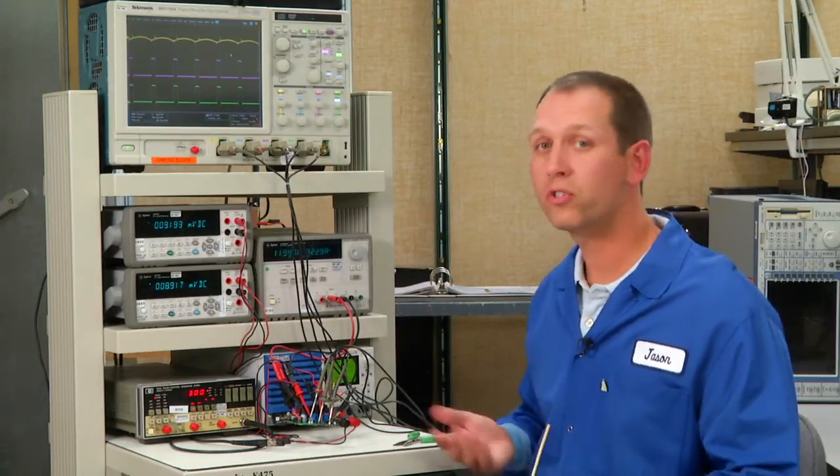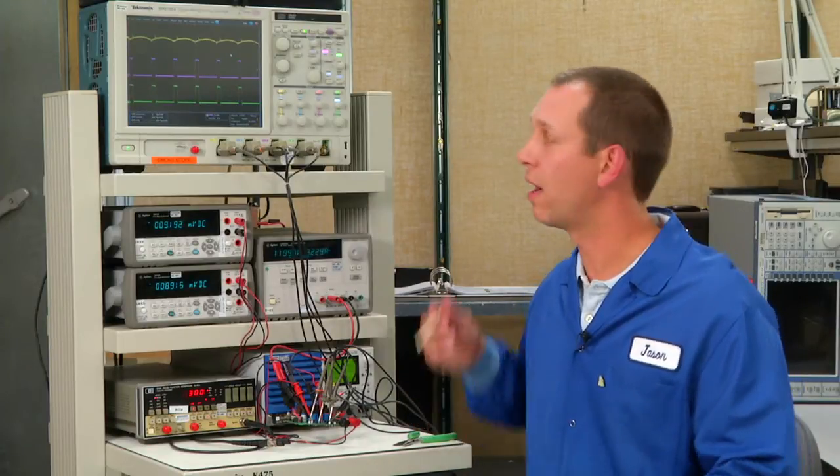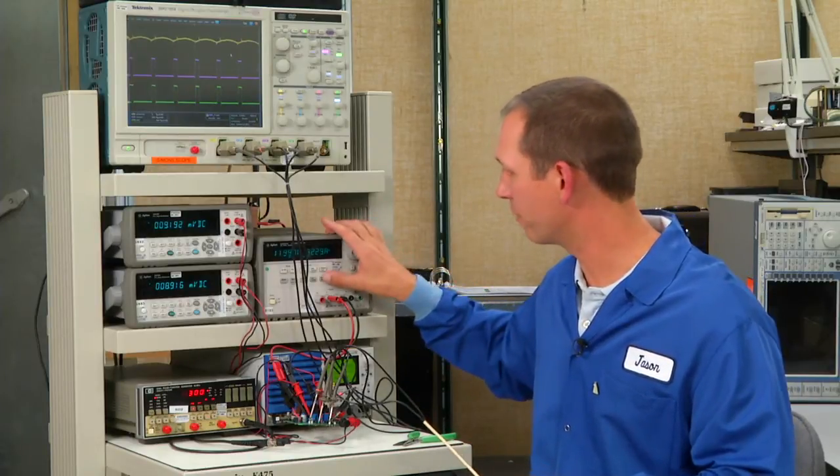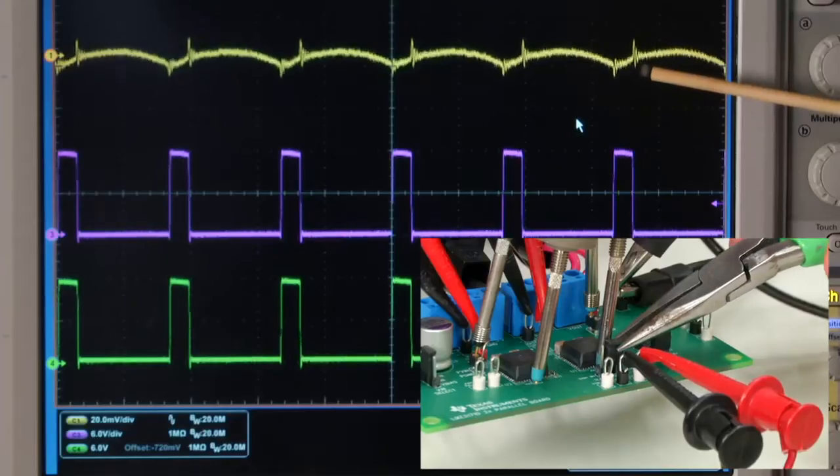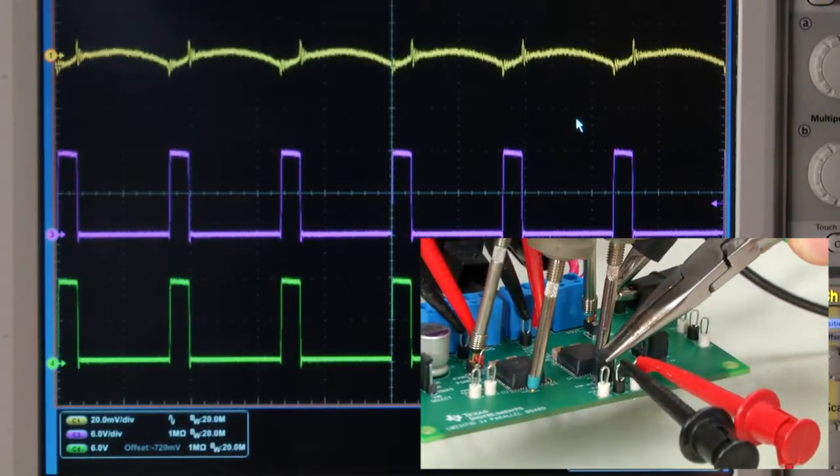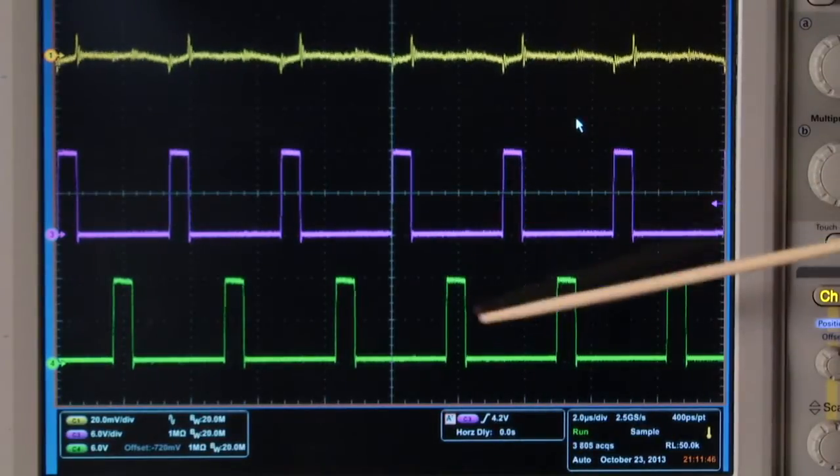Now we're also able to use the sync out feature to improve our output voltage ripple. I'm going to shut this off, remove that jumper, and sync it 180 degrees out of phase. As I turn it back on, now we see that both of the switch nodes are 180 degrees out of phase, and it's also reduced our output voltage ripple.